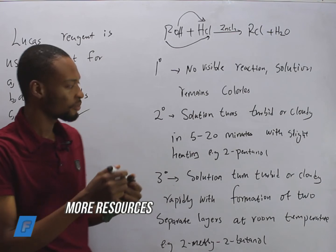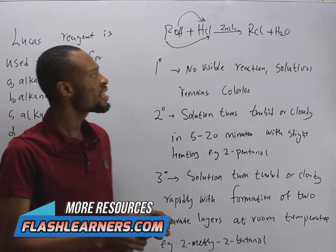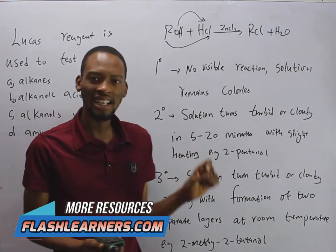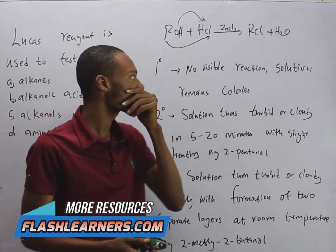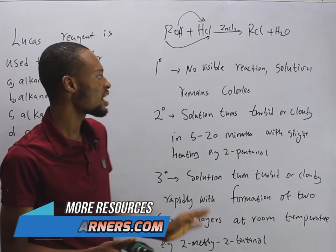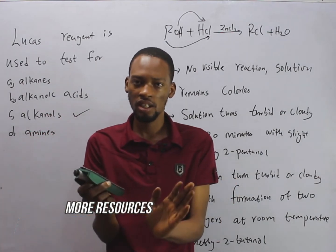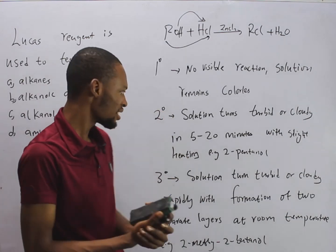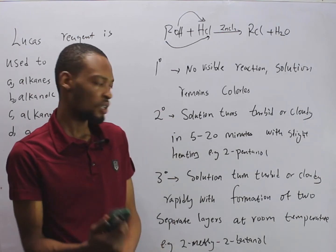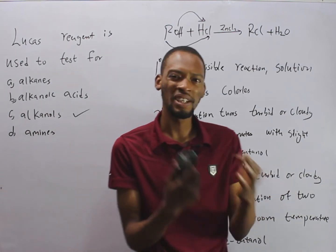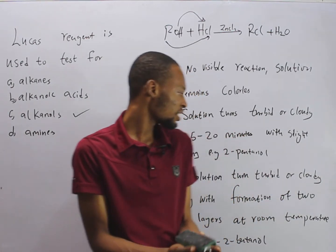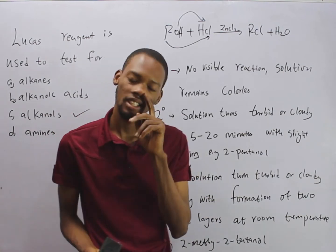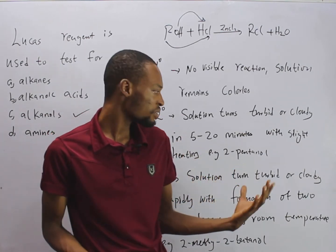When testing primary alcohols with Lucas reagent, there is no visible reaction and the solution remains colorless. For secondary alcohols in Lucas reagent, the solution turns cloudy within five to twenty minutes with slight heating. An example is pentan-2-ol.